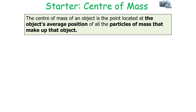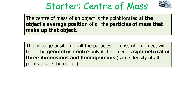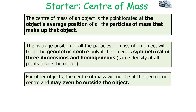The centre of mass of an object is the point located at the object's average position of all the particles of mass that make up the object. The average position of all the particles will be the geometric centre of the object only if the object is symmetrical in three dimensions and homogenous — meaning it has the same density at all points inside. For other objects, the centre of mass will not be the geometric centre, and can even be outside the object or in an area with no mass, such as a hole in the object.